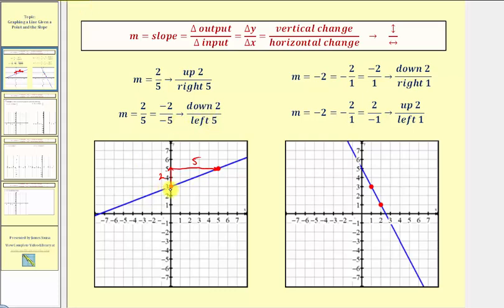So if we use the slope in this form, we would go down two and left five. From the given point, if we go down two and left five, we still find a second point on the line. This is helpful if the second point would otherwise be off the coordinate plane — we can always adjust the slope and use it a different way.